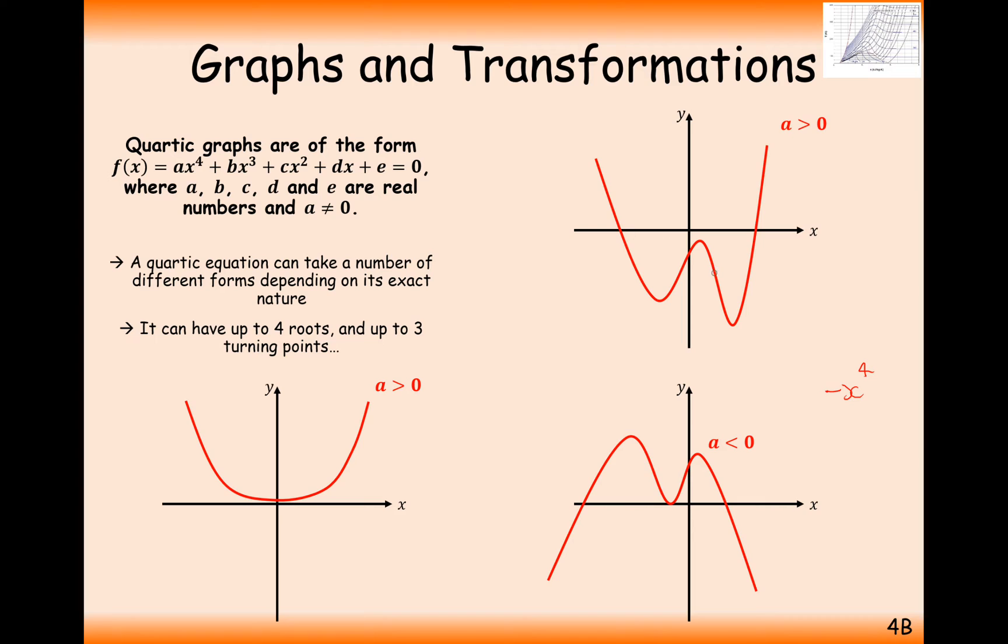In general here we're either going to get 1, 2, 3, or 4 intersections with the x-axis, depending upon repeated roots. At maximum it's going to be 4, at minimum it's only going to be 0.